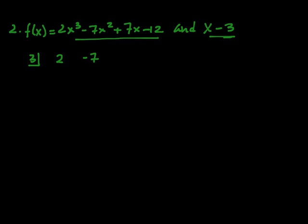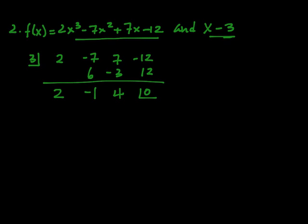2, negative 7, 7, and negative 12. Let's bring down the 2. We have a 6, negative 1, negative 3, and a 4, and 12. So that's a 0 remainder.